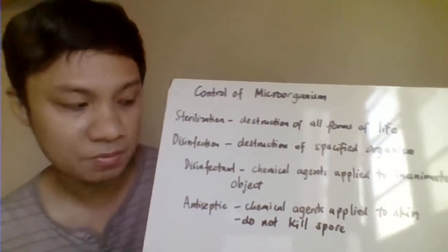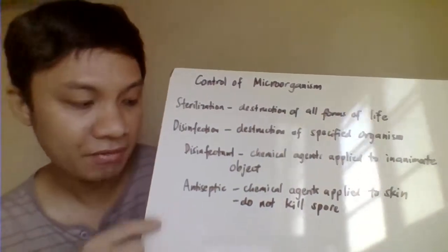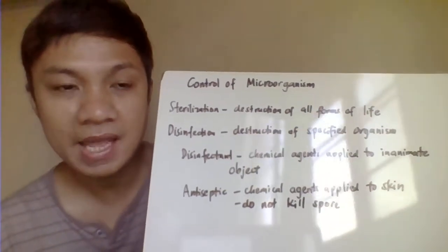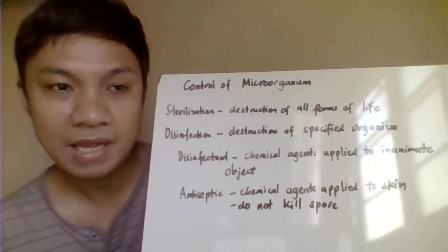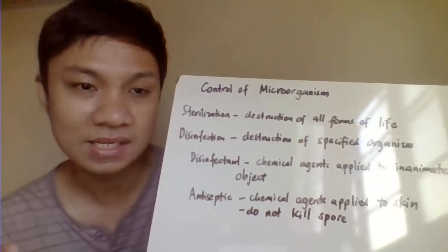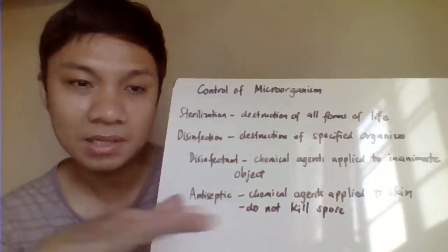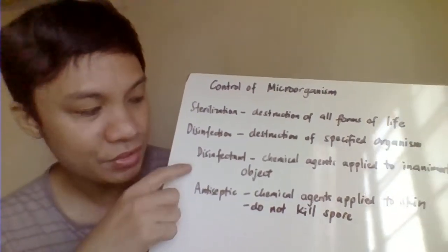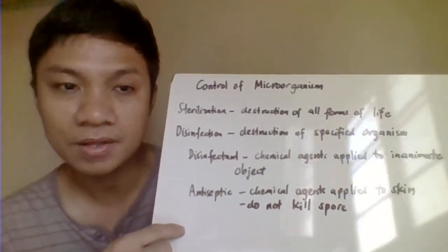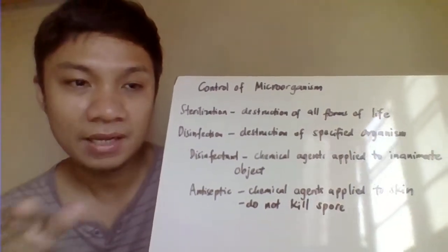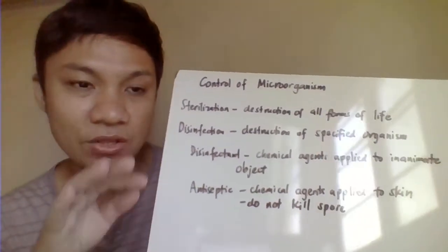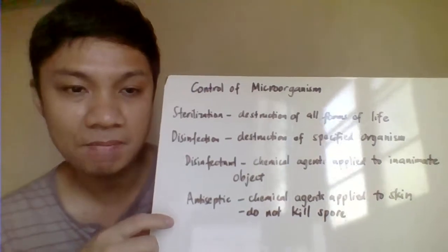We also differentiate disinfectant versus antiseptic. A disinfectant is a chemical agent applied to inanimate objects — surfaces like bench tops or table tops. An antiseptic, on the other hand, is a chemical agent applied only to the skin. Disinfectants should be used on surfaces, not on skin; antiseptics are the ones applied to the skin.